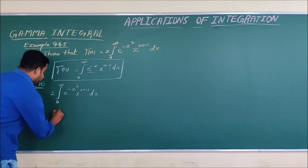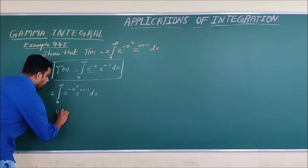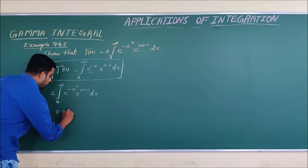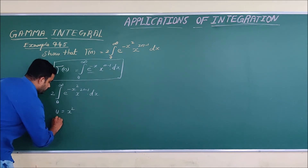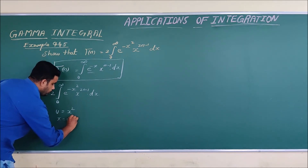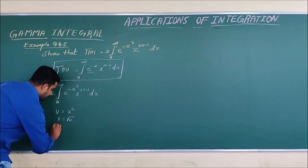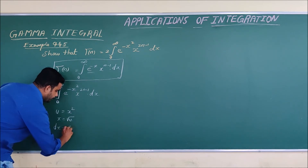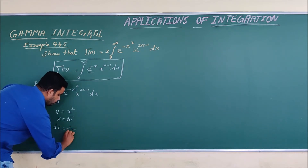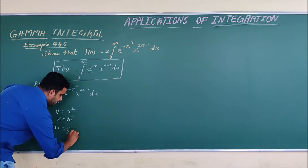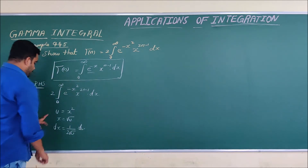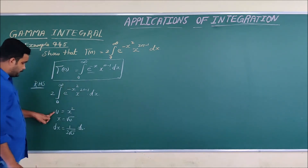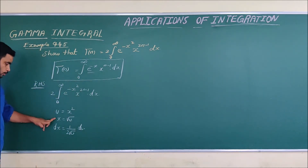We let u equal to x squared, so x is equal to root u. Then dx is equal to 1 over 2 root u, times du. So we now have the values of u and dx ready to substitute.